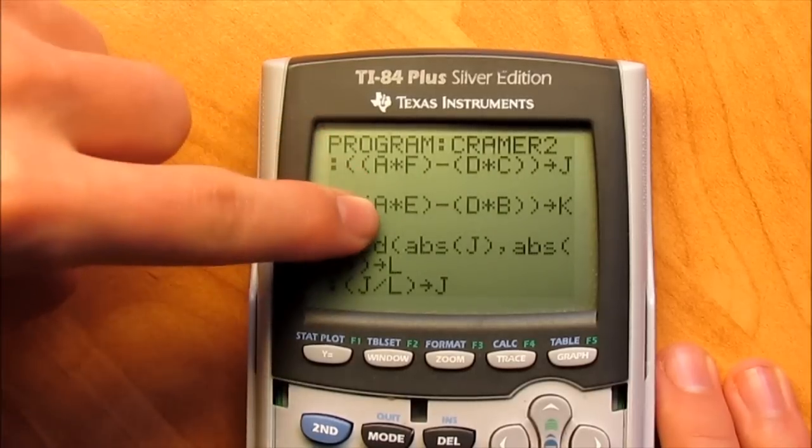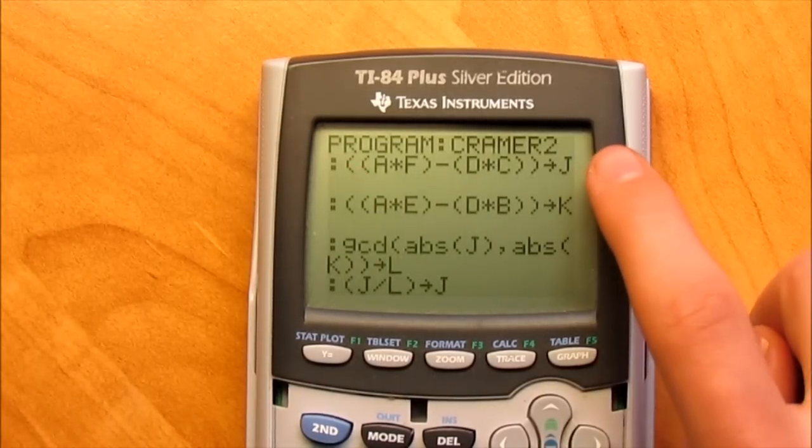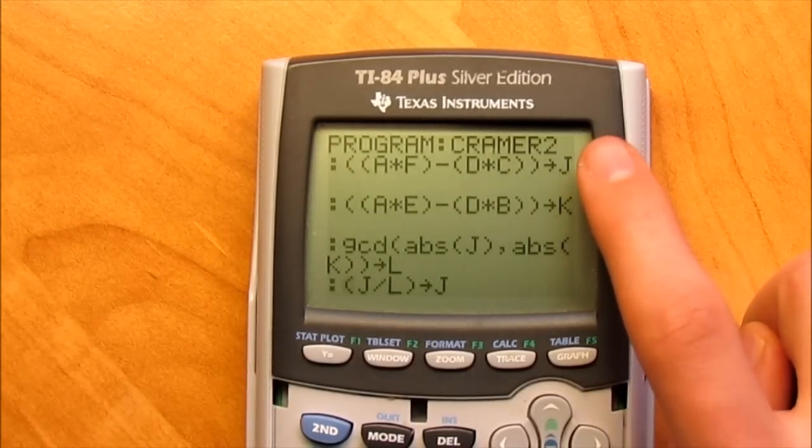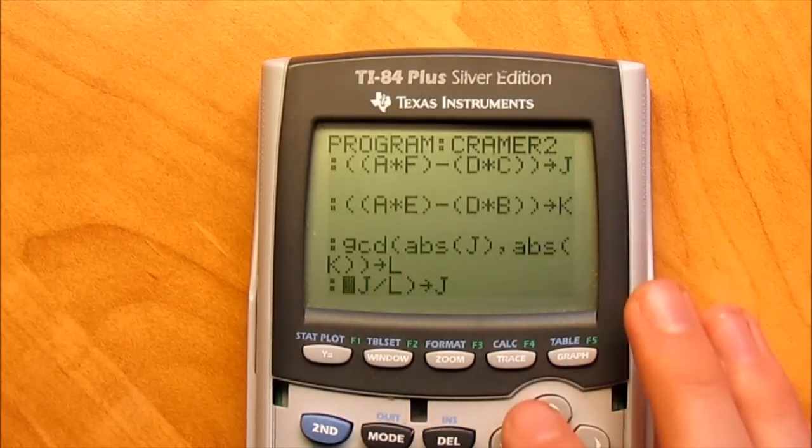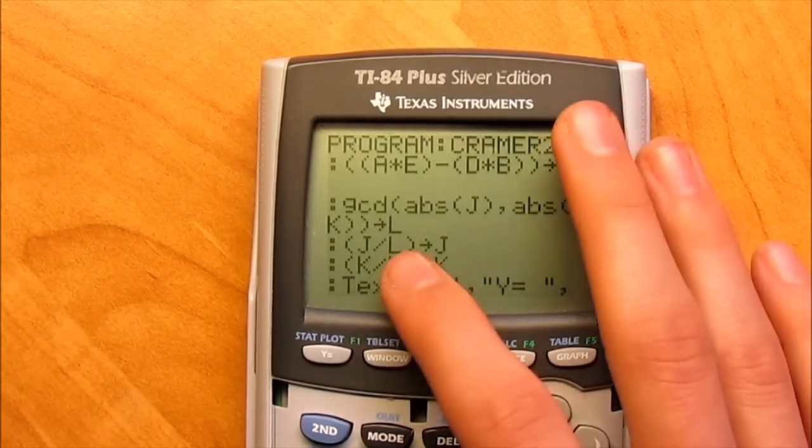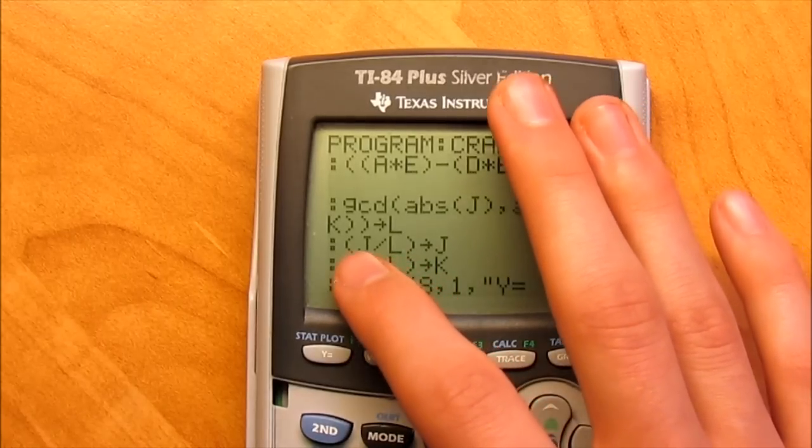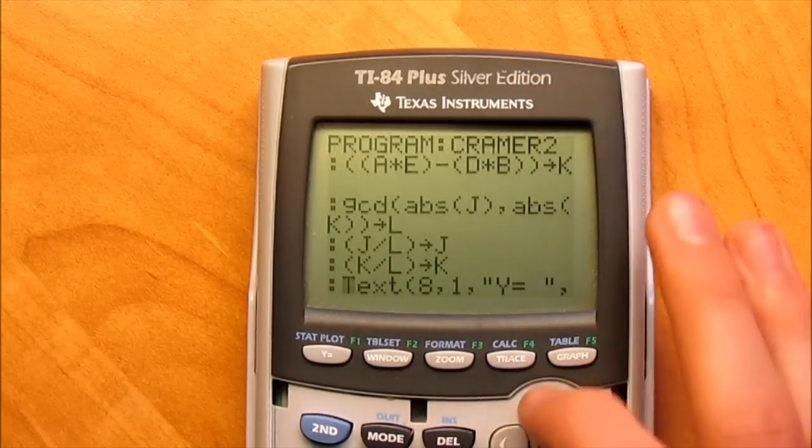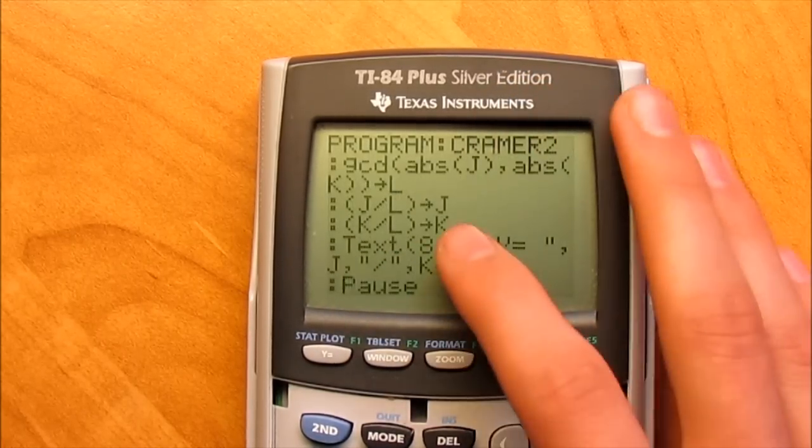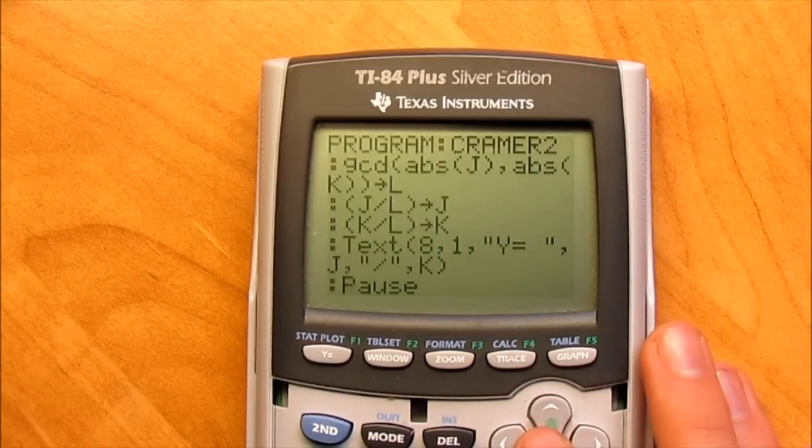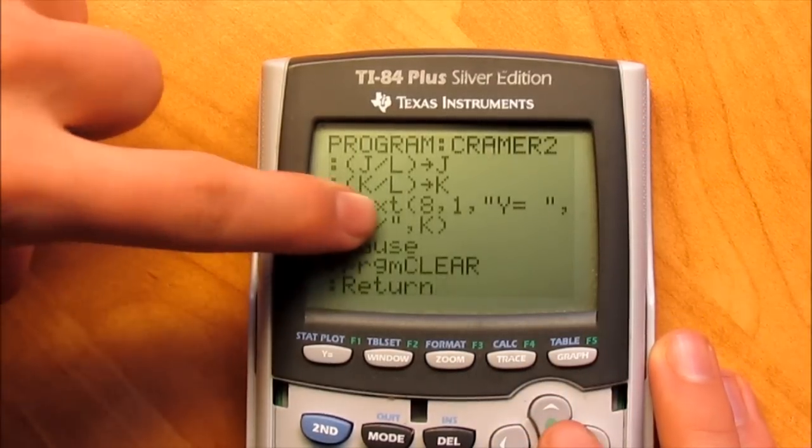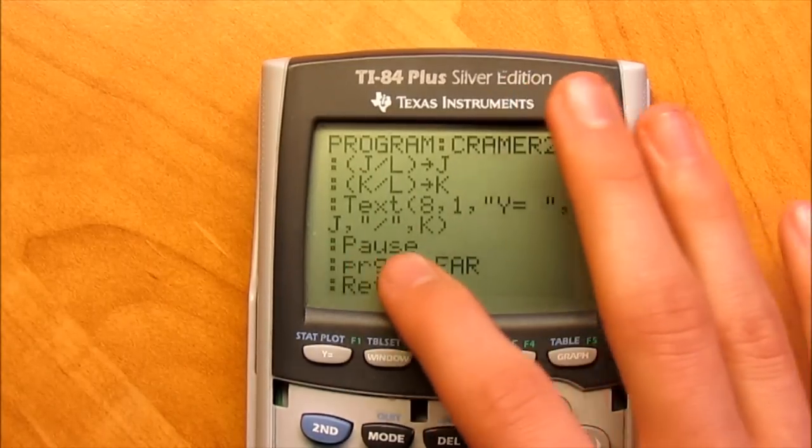This is doing the math for the second part. And again, storing the math as j and k. Finding the greatest common factor of j and k, storing it as l. Then j over l, k over l, store as j, store as k. So those are simplified, or they're as simplified as they can be. Then it displays y equals j over k.